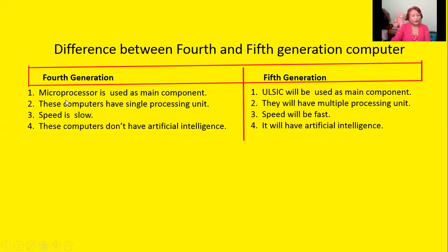The second difference: fourth generation computers have a single processing unit, while fifth generation computers will have multiple processing units — they can use more than one processing unit.